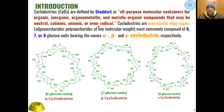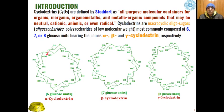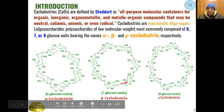Basically these are macrocyclic oligosugars — oligo meaning oligosaccharides — which are low molecular weight polysaccharides mainly composed of either six, seven, or eight numbered glucose units.